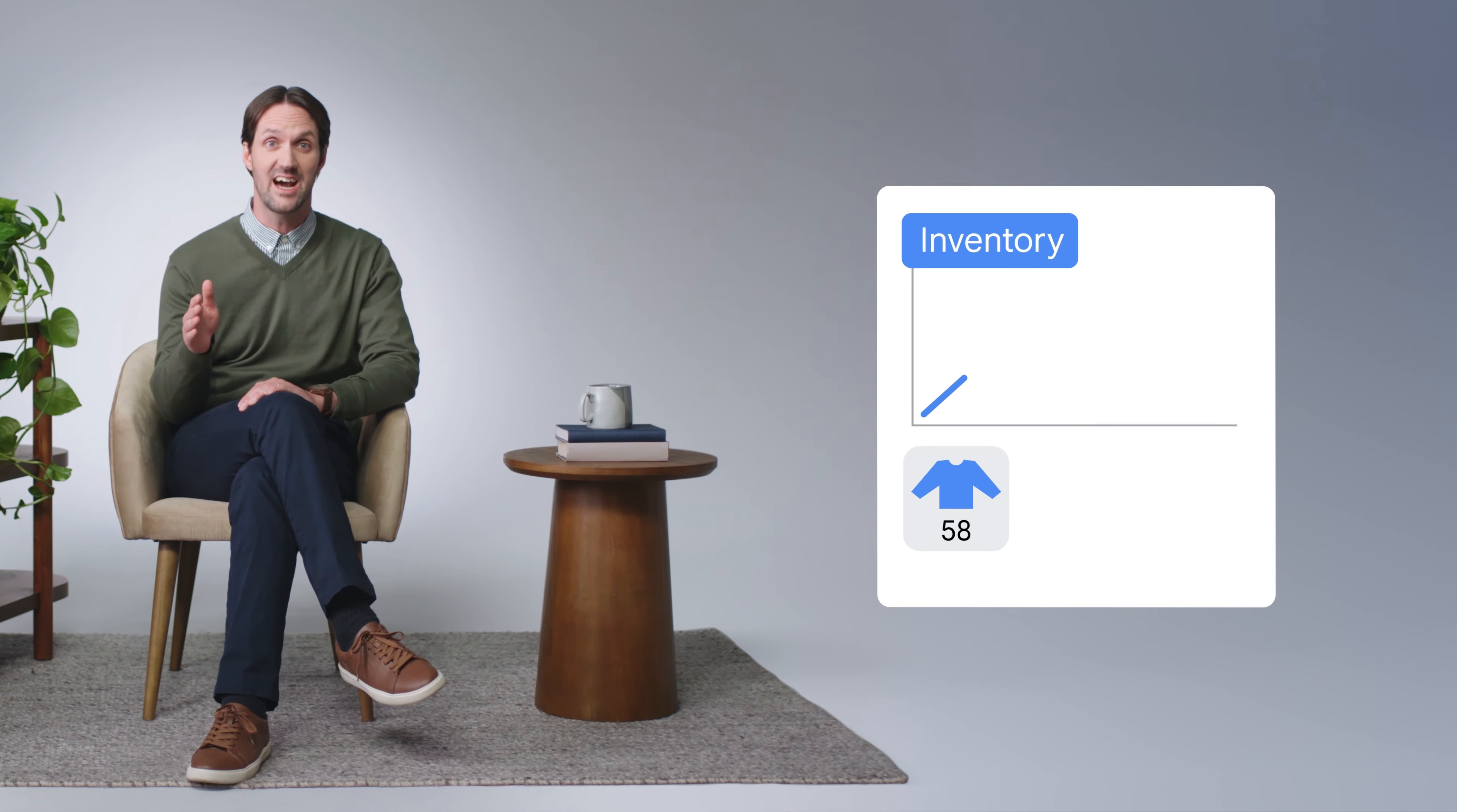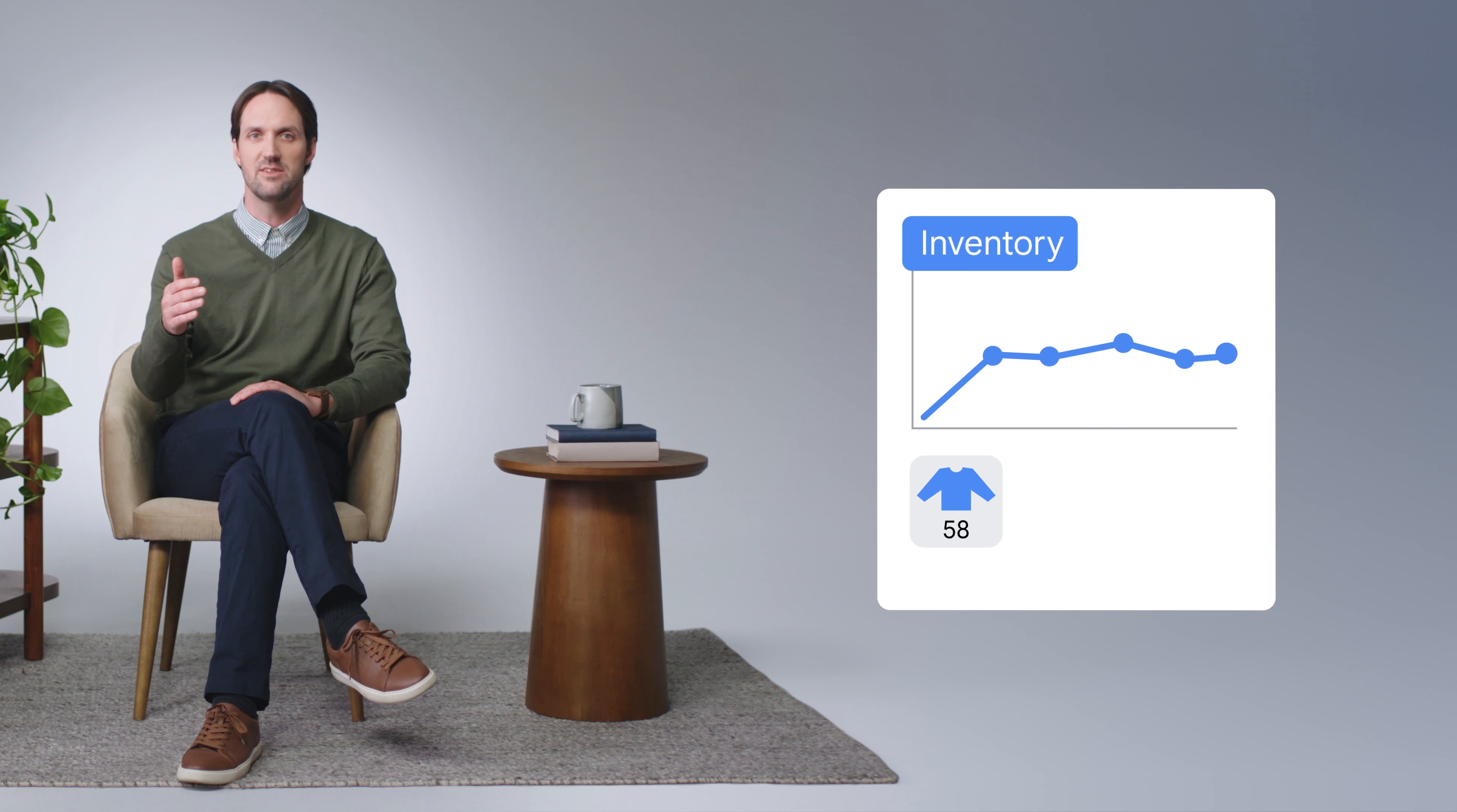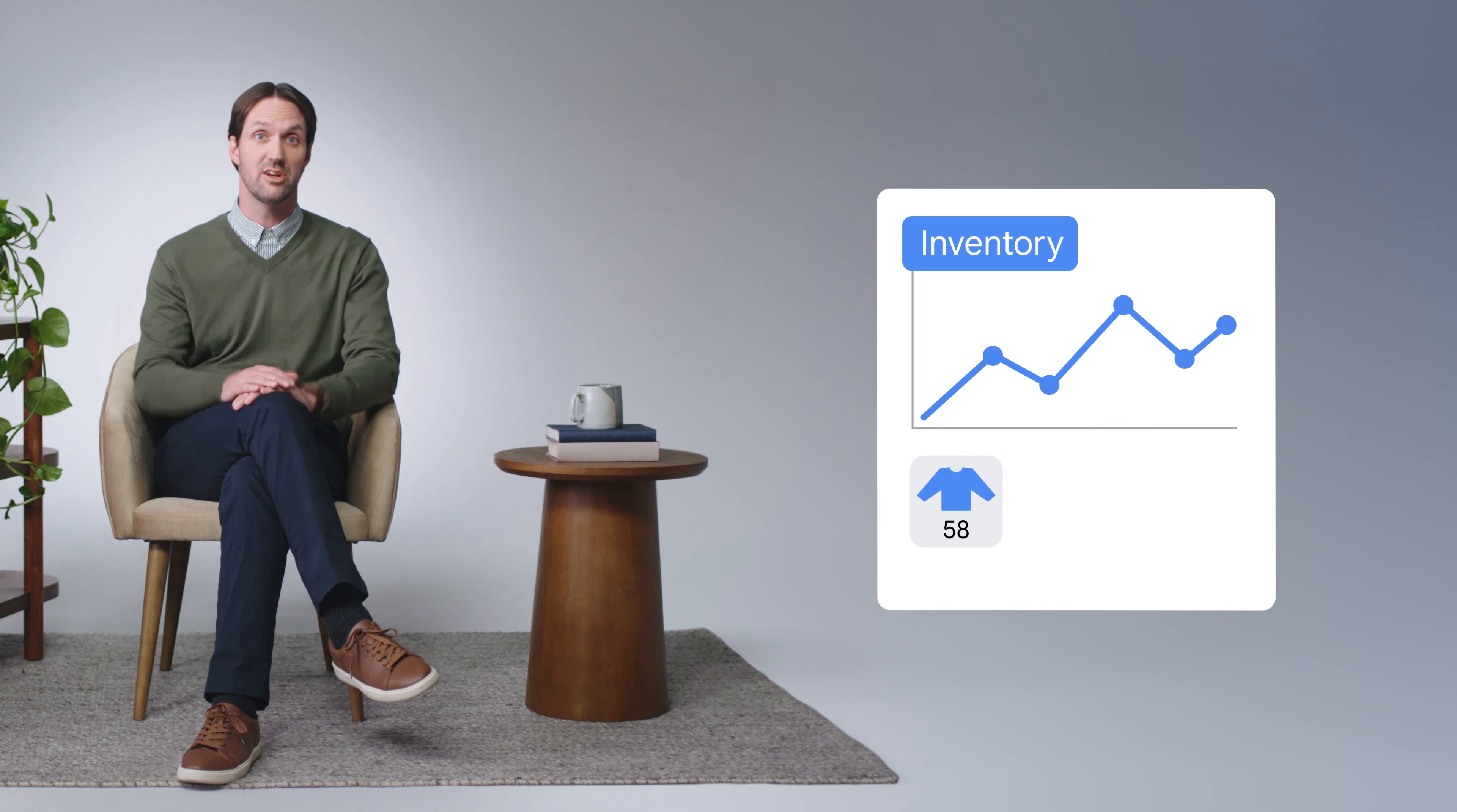For example, picture working at a retail company using an AI tool to forecast how much product inventory to order. If the AI tool produces inaccurate, outdated, or misinterpreted information, those hallucinations could lead the company to order the wrong amount of inventory, causing supply issues for customers.